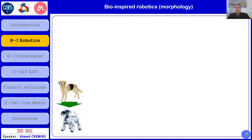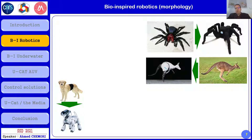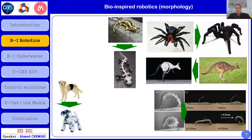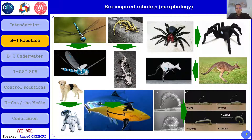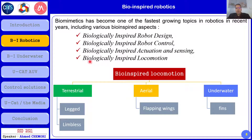Some examples of bio-inspired robots highlight the importance of morphology. Examples include quadrupeds bio-inspired from animals, legged robots, hexapods, hopping robots bio-inspired from kangaroos, salamander robots, worms, dragonfly robots, and underwater robotic fish. The aspects we can mimic from biology include bio-inspired robotic design, bio-inspired robot control, bio-inspired actuation, bio-inspired sensing, and bio-inspired locomotion.